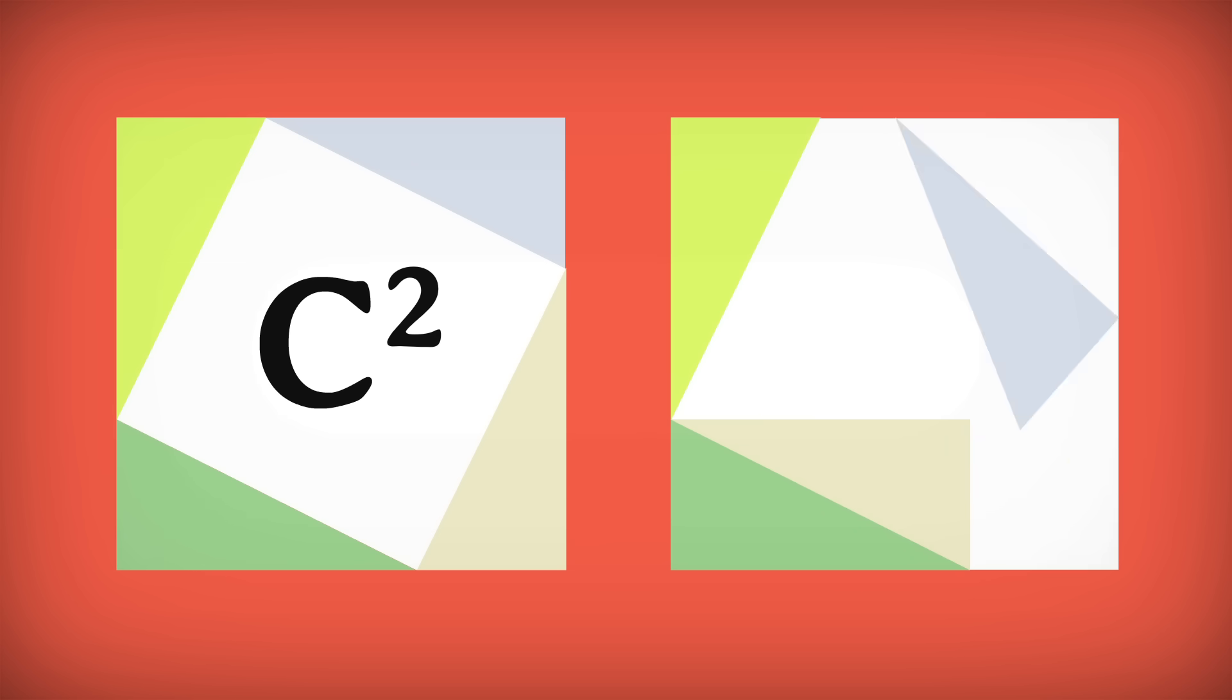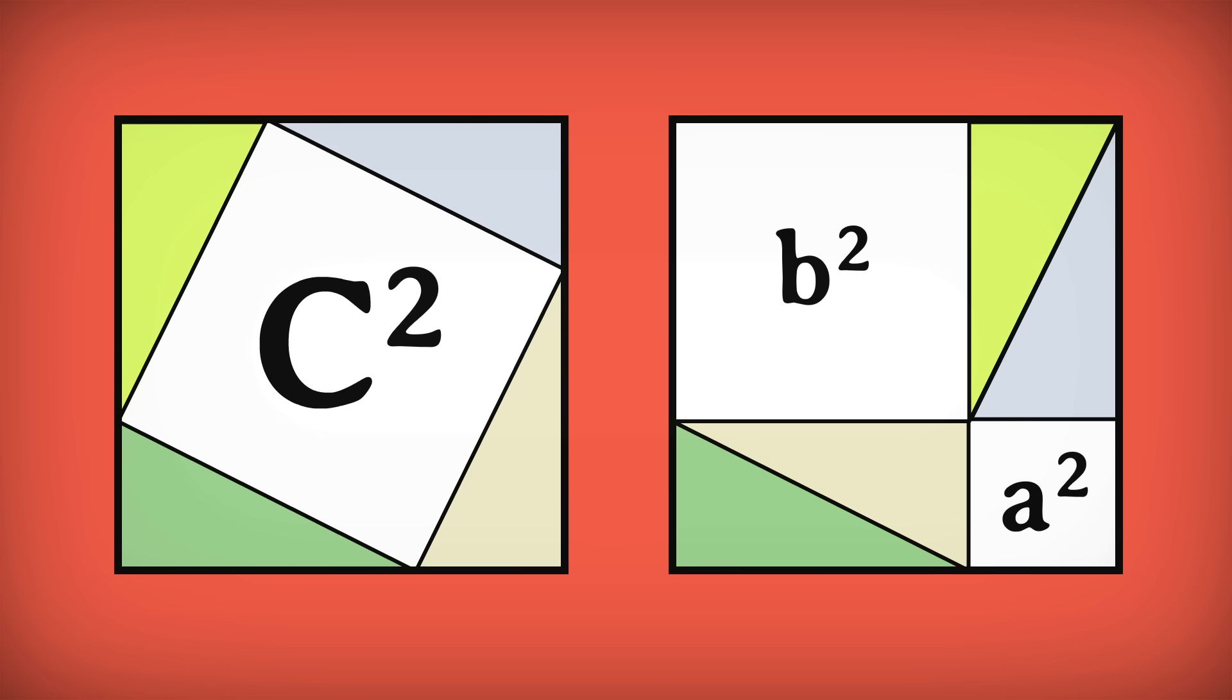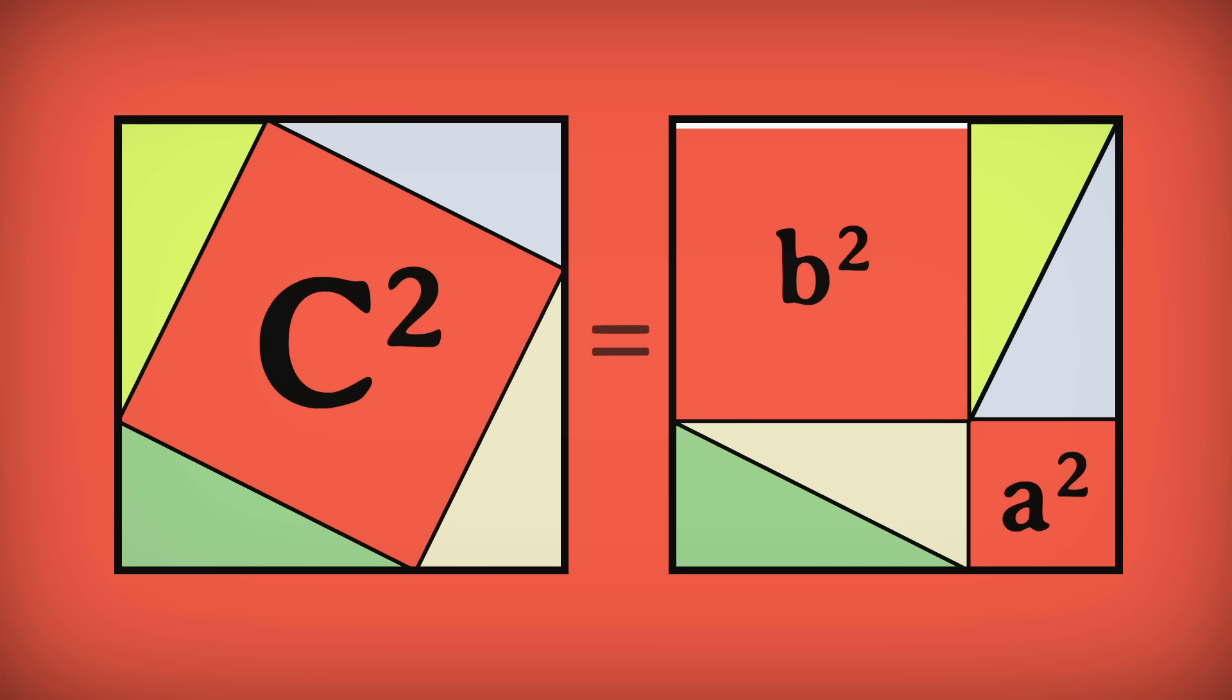Now rearrange the triangles into two rectangles, leaving smaller squares on either side. The areas of those squares are A squared and B squared. Here's the key. The total area of the figure didn't change and the areas of the triangles didn't change. So the empty space in one, C squared, must be equal to the empty space in the other, A squared plus B squared.